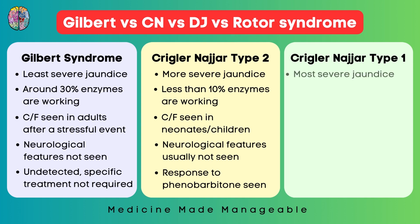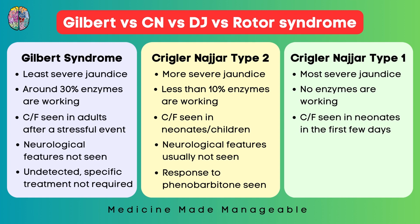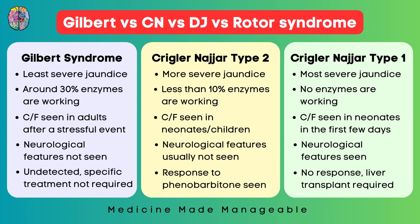Crigler-Najjar syndrome type 1 has the most severe jaundice because almost no enzymes are working. Clinical features appear in neonates within the first few days of life, and neurological features are seen. Even after giving phenobarbitone, no response is seen, and so liver transplant is required.